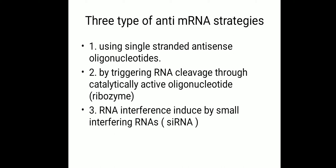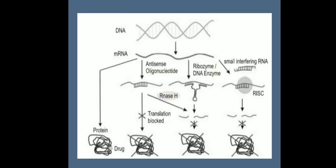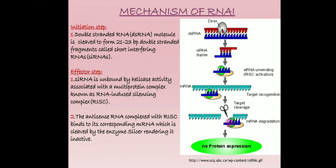To summarize the three strategies: first is using a single-stranded antisense oligonucleotide; second is using ribozyme, which is an RNA enzyme that inhibits RNA activity so protein cannot be synthesized; and third involves RISC — the RNA-Induced Silencing Complex — which silences the RNA. RISC stands for RNA-Induced Silencing Complex, and it acts as an inhibitor to silence the RNA.